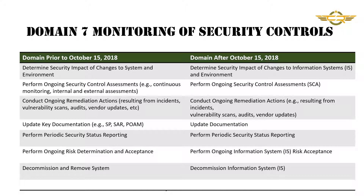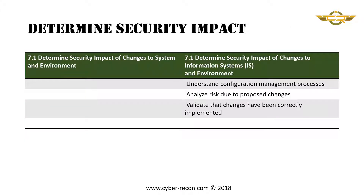Domain 7 remains unchanged. Prior to October 15th, the subject areas are: determine security impact of changes to system and environment, perform ongoing control assessments, conduct ongoing remediation action, update key documents, perform periodic security status reporting, perform ongoing risk determination and acceptance, and decommission and remove the system. After October 15th, the subject areas are: determine security impact of changes to information system and environment, perform ongoing security control assessment, conduct ongoing remediation actions, update documentation, perform periodic security status reporting, perform ongoing information system risk acceptance, and decommission the information system.